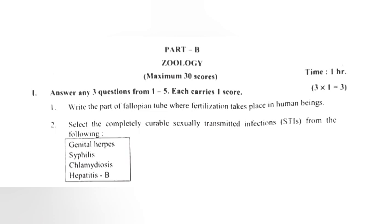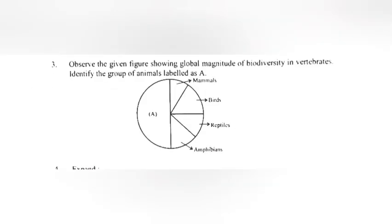Question 3: Observe the given figure showing global magnitude of biodiversity in vertebrates. Identify the group of animals labelled as A. Answer: Fishes.